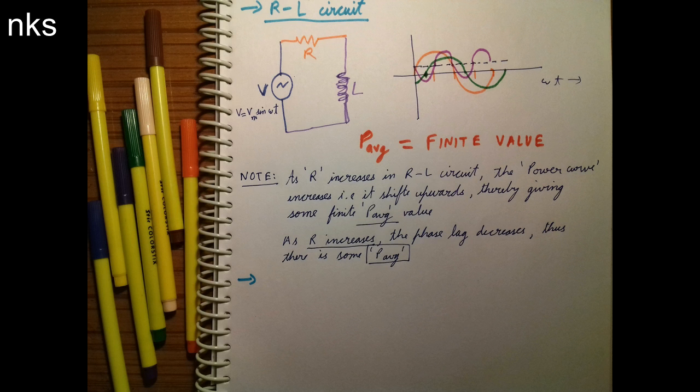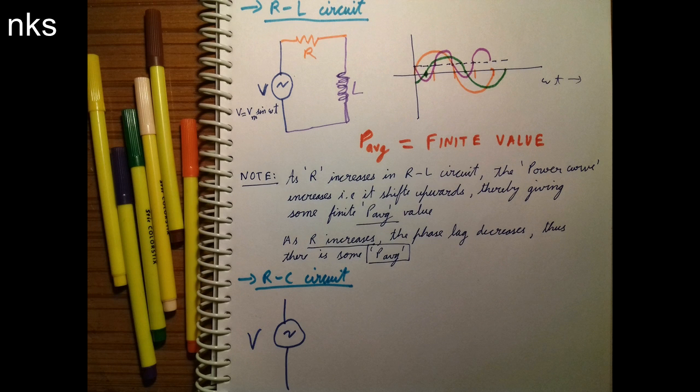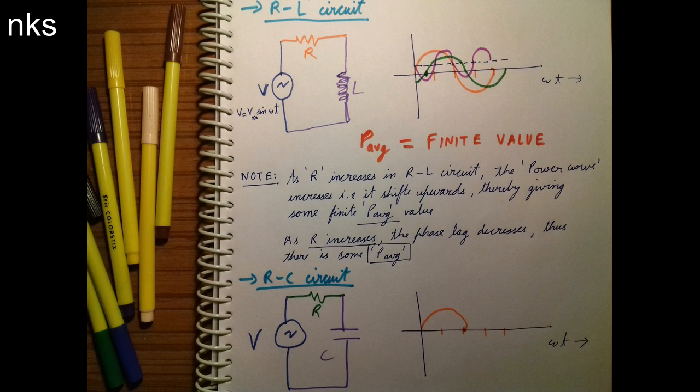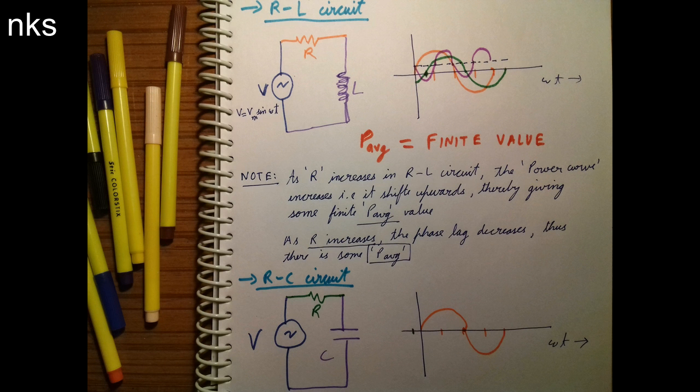So this is important. Hope you understood it. Now let us take RC circuit and draw the waveforms. So the voltage waveform is in orange color as shown on the screen. Now we will draw the current waveform. The current will lead the voltage by an angle less than 90. Why less than 90? Because it is not a purely capacitor circuit.